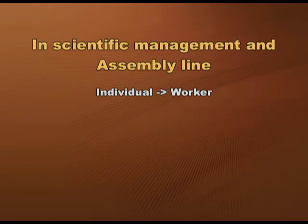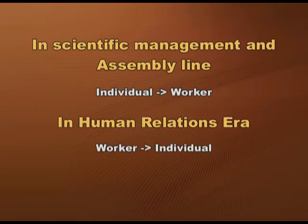This detachment led to conflict and antagonistic relations between workers and management. Human relations theories criticized scientific management and the assembly line for being inflexible and dehumanizing — treating workers as purely economic entities working for wages only. HR theories shifted focus from productivity to the social and psychological needs of workers. In scientific management the individual was treated as a worker, whereas in the human relations era the worker was treated as an individual.